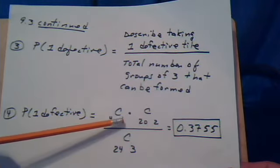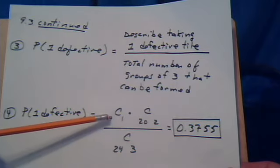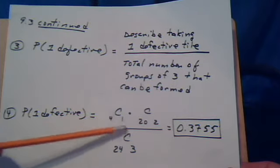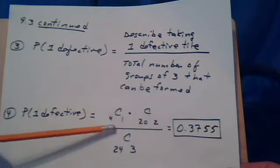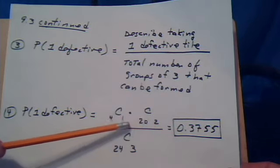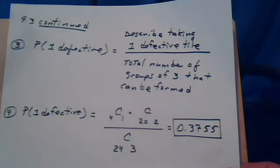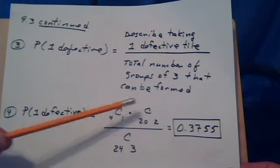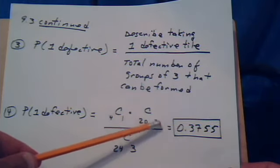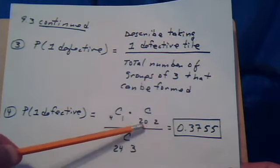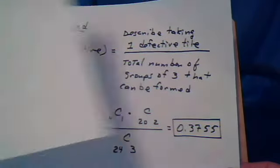So how many groups of one can you form from four tiles? That will count that. We need two more tiles. Remember, we're taking three. So this accounts for one of them. There's two more. So this other two, they would have to come from the non-defective tiles.